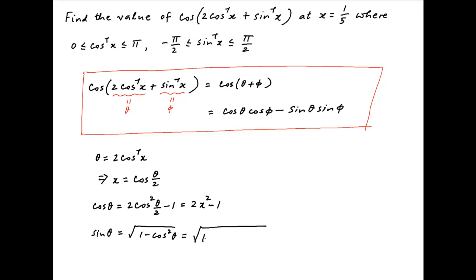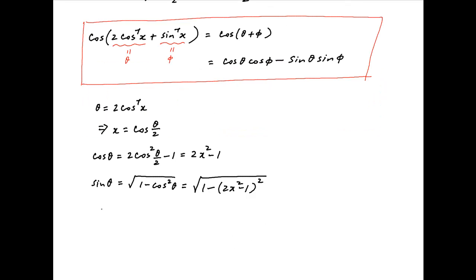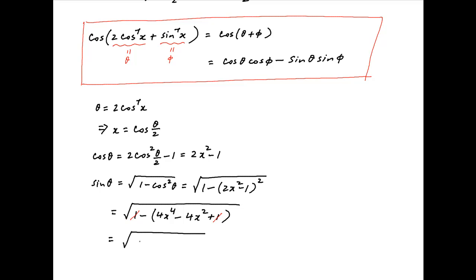Sin theta, which is equal to square root of 1 minus cos squared theta, is therefore equal to square root of 1 minus (2x squared minus 1) whole squared. This is equal to root of 1 minus (4x to the power 4 minus 4x squared plus 1), which is equal to square root of minus 4x to the power 4 plus 4x squared, which is equal to square root of 4x squared times (1 minus x squared).